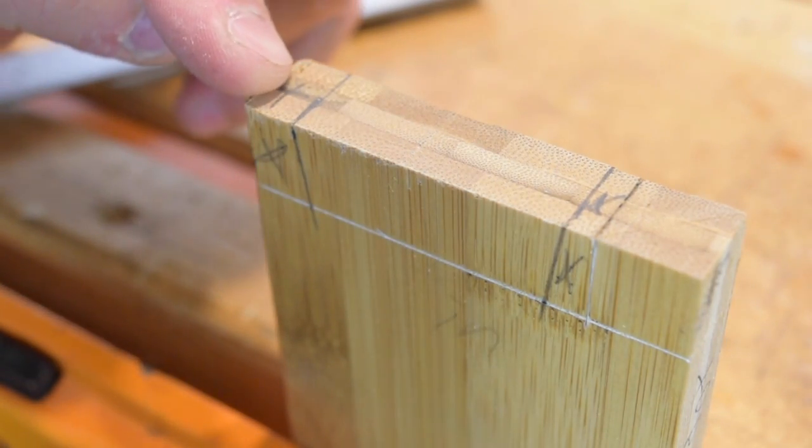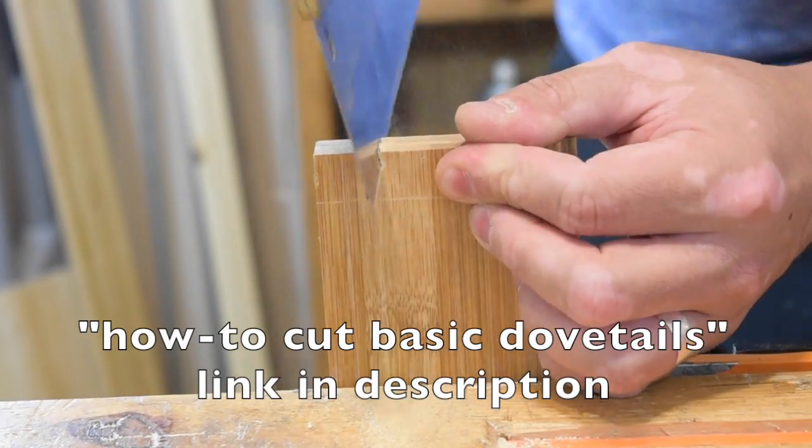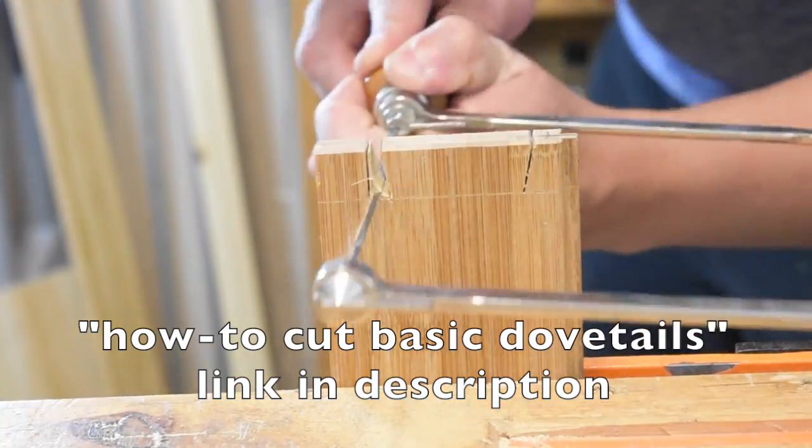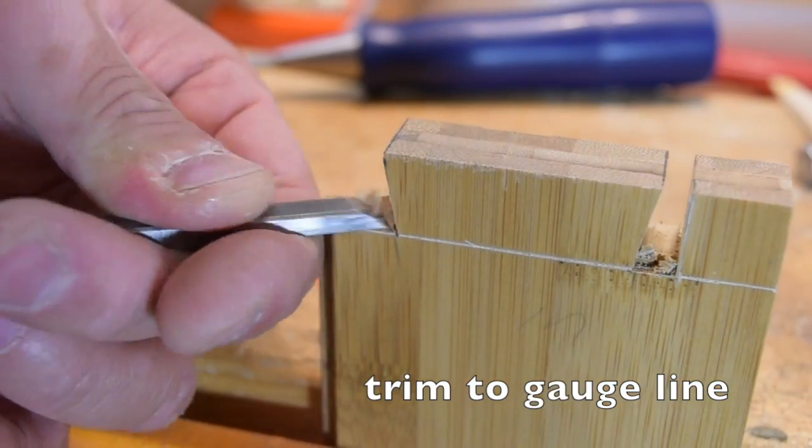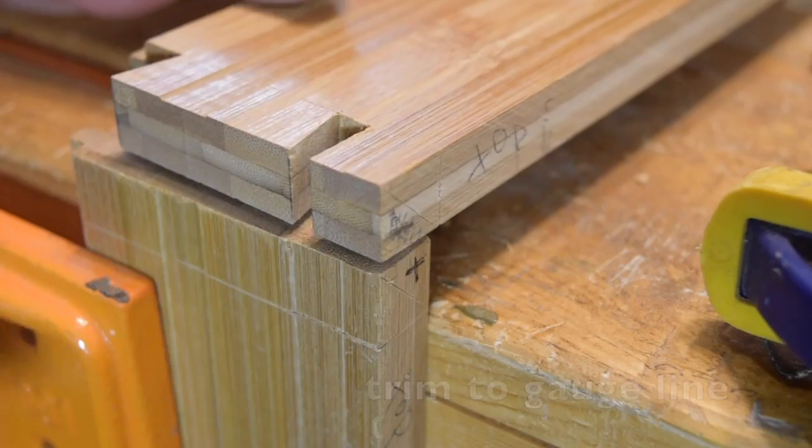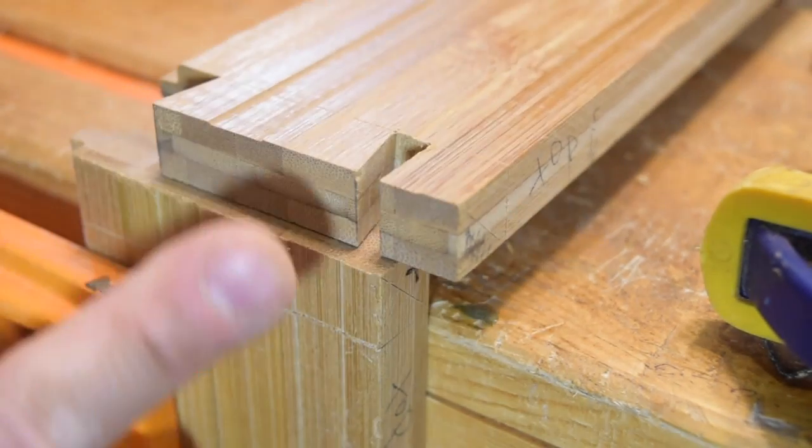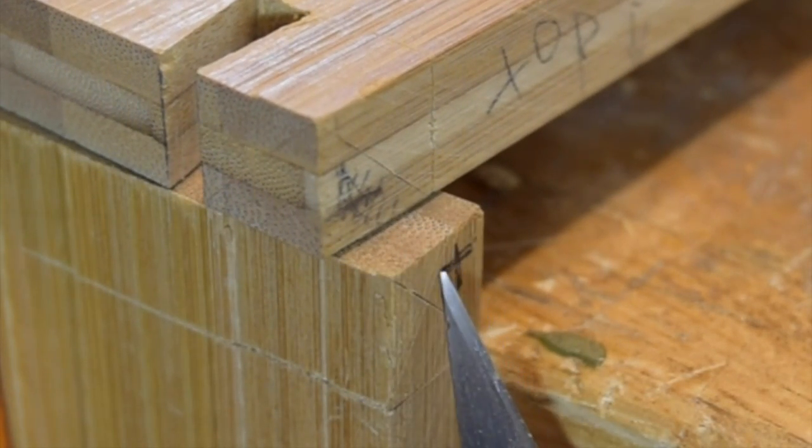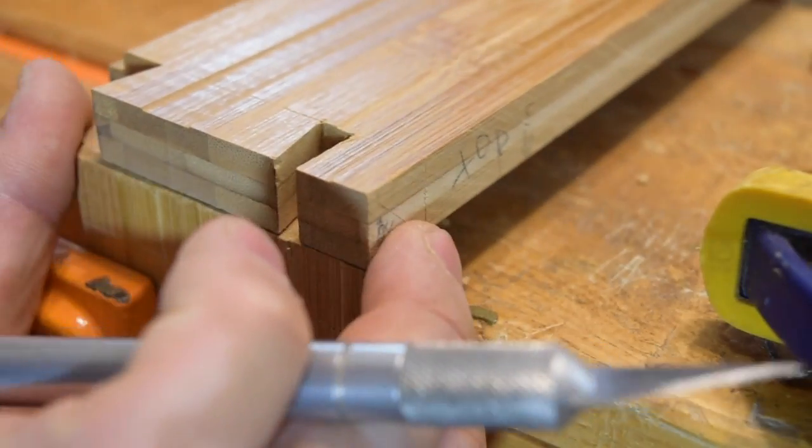Now that I have these two pieces cleaned out, I'm ready to transfer the tail piece onto the pin piece. You notice over here I made a similar diagonal marking on the tail piece as I did on the pin piece.